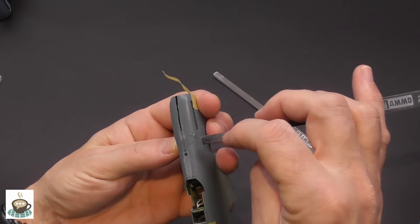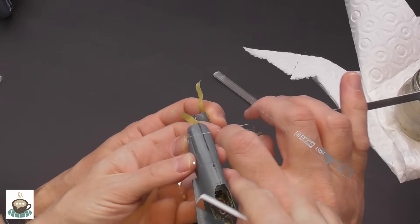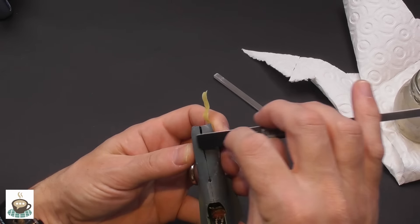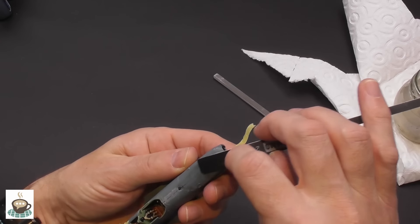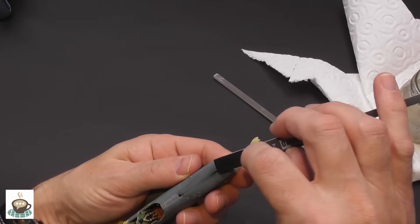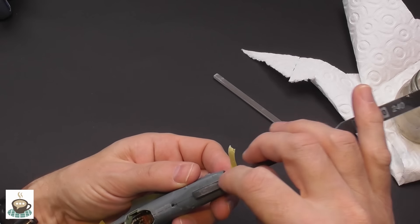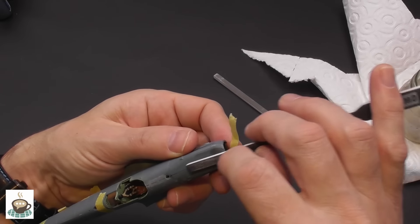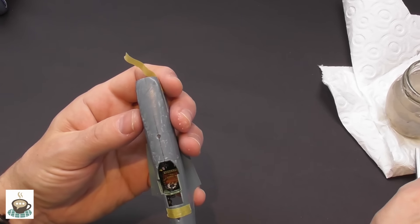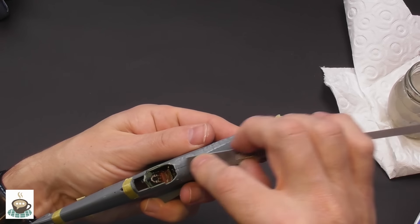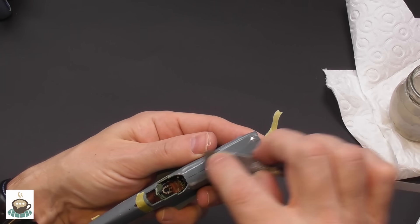Then straight away we can go in with the sanding sticks. Going in with a relatively coarse one initially and taking care not to sand a flat spot. The nose cowling is actually rather flat but the rest of the fuselage is rounded, so I do try and be careful. Using a little bit of water where I can, that just helps to lubricate the sanding stick.